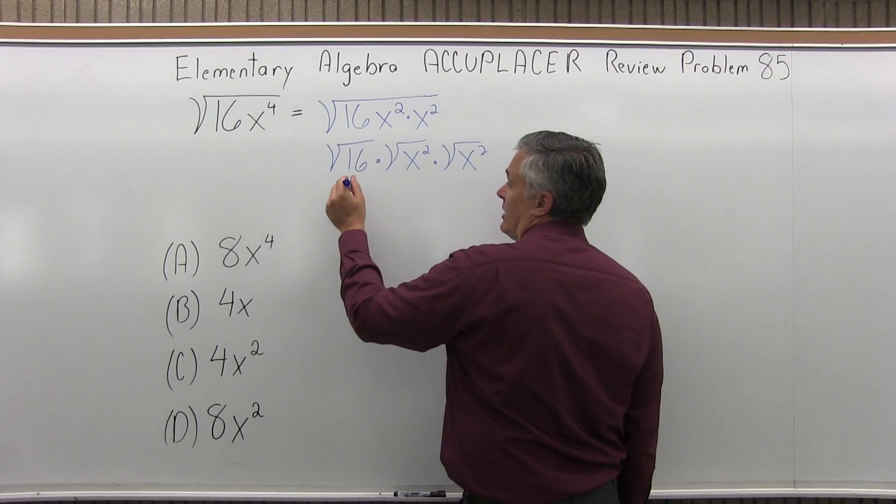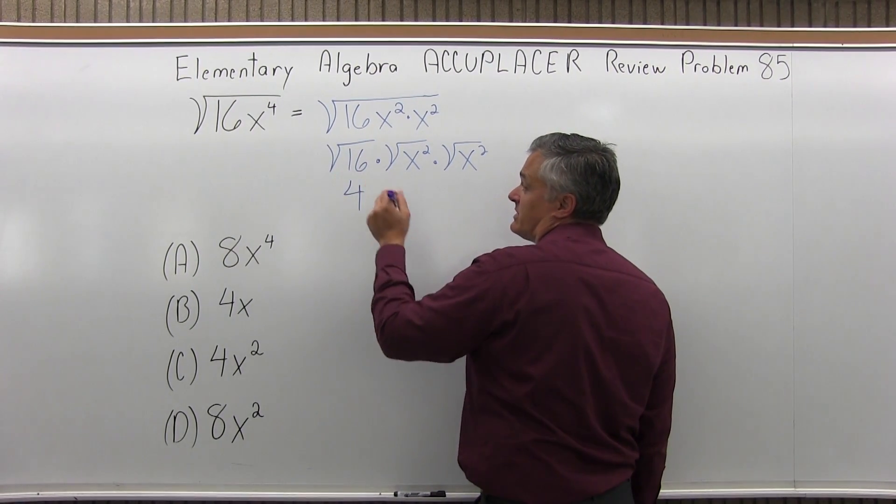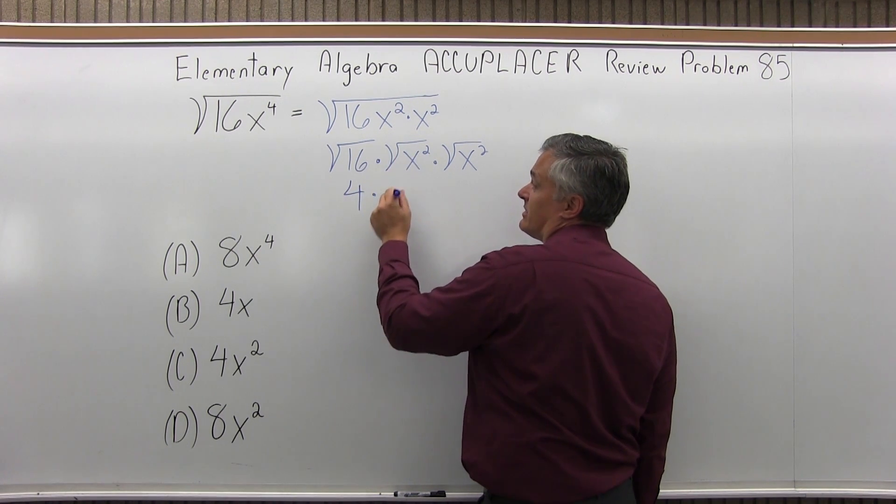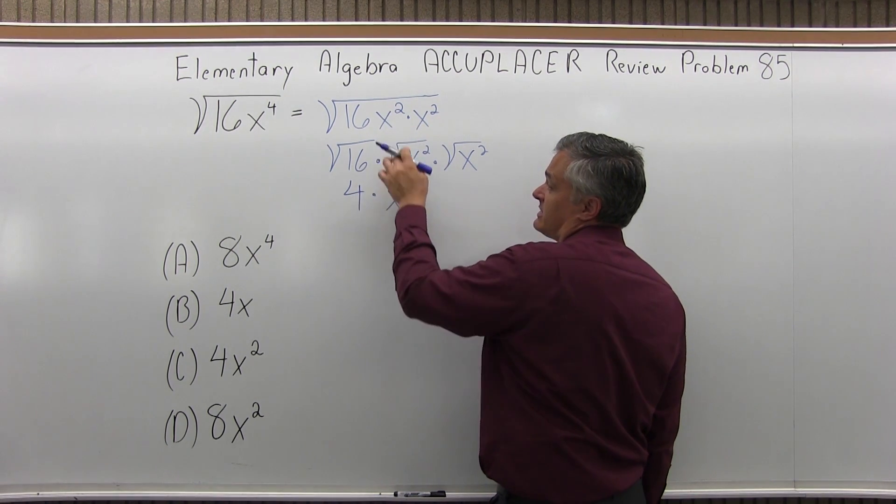Now, the square root of 16 I know is 4, because 4 times 4 is 16. And then the square root of x squared is x, right? Square root of x squared is x, no matter what x is.